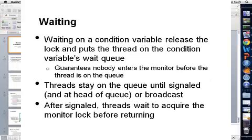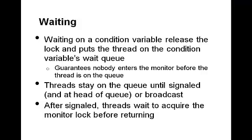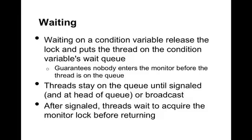Let's talk more about how to correctly wait on things. When a thread waits on a condition variable, it releases the monitor lock and puts the waiting thread on the condition variable's queue. The one important thing it guarantees is that no other thread enters the monitor before the thread is on the queue. This means that nobody will call signal between the time when a thread decides to wait and actually gets put on the queue. Threads will stay on the queue until they're signaled if they're at the head of the queue, or there's a broadcast which wakes up all threads. After a thread has been signaled, it has to wait to get the monitor lock before returning — it doesn't immediately get to start running again, and there might be other threads already waiting on the lock that this thread queues behind.